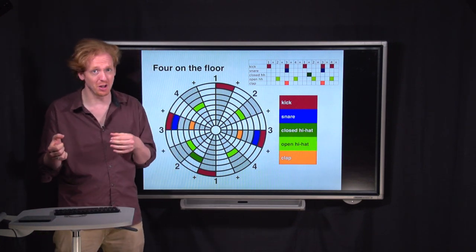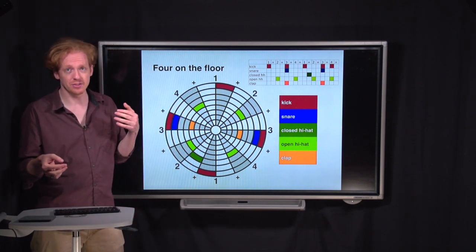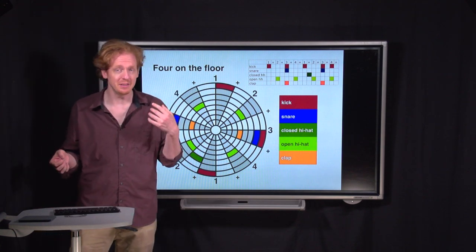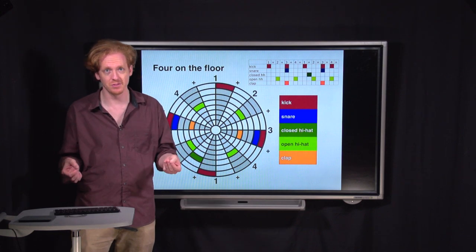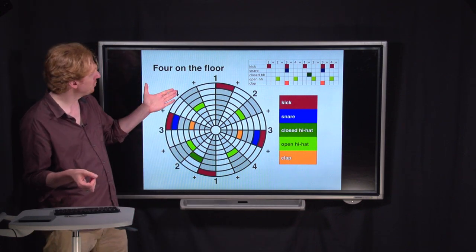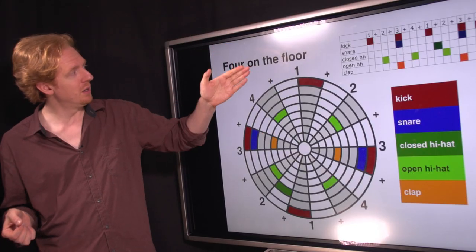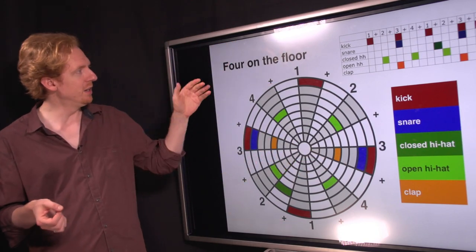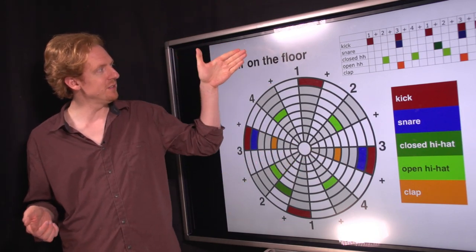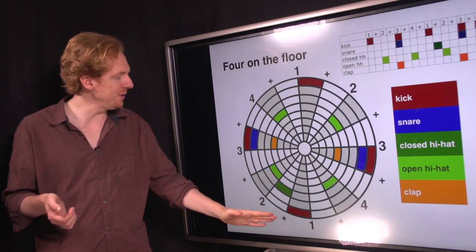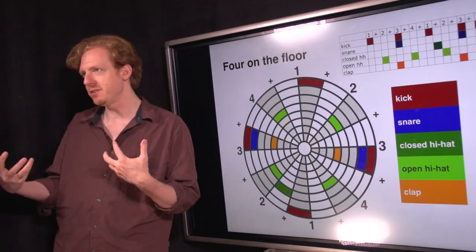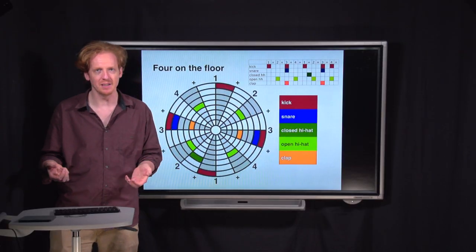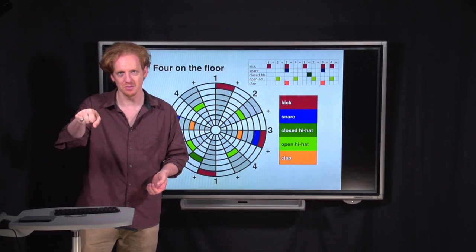So, this first beat is called Four on the Floor. It's something that you hear in every disco, techno, EDM song. It's called Four on the Floor because you've got a kick drum here, here, here, and here. All of the strongest beats. The downbeat, the backbeat, the next downbeat, the next backbeat. And any kind of disco, techno, EDM beat is going to have those four kick drums on the strongest beats.